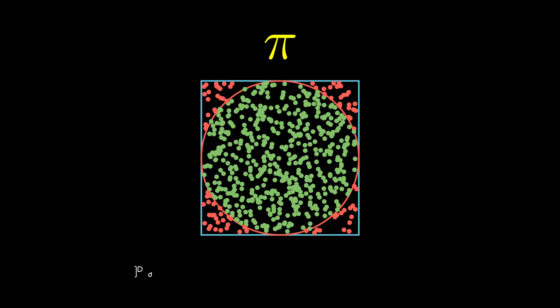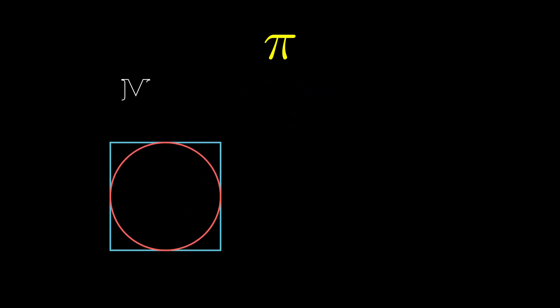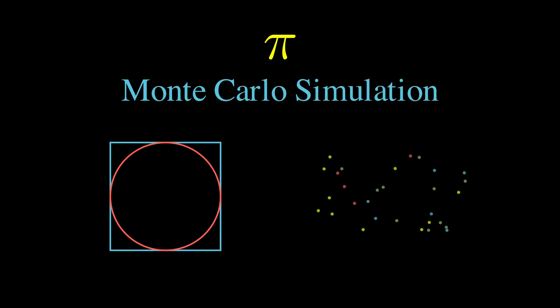It sounds impossible, right? How could random throws at a board possibly tell us anything meaningful about the ratio of a circle's circumference to its diameter? And yet this is exactly what happens when we use a technique called Monte Carlo simulation, a method so powerful that it's used everywhere from predicting stock prices to designing nuclear reactors.